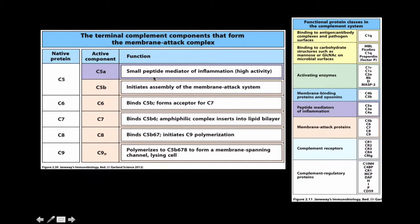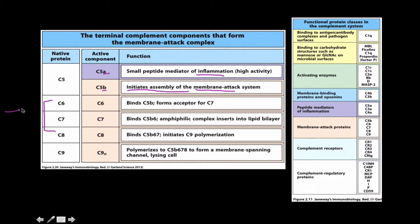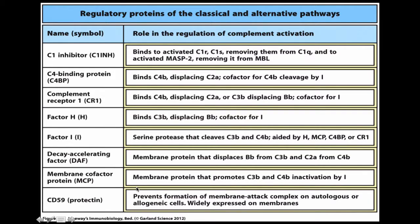This is an overview of the native proteins and active components. C5 is cleaved into α and β: α is an anaphylatoxin causing inflammation, and β initiates assembly of the MAC. C6 through C8 form the scaffold, and C9 polymerizes — that's what I call the drill. There's no need to review that in much more depth.